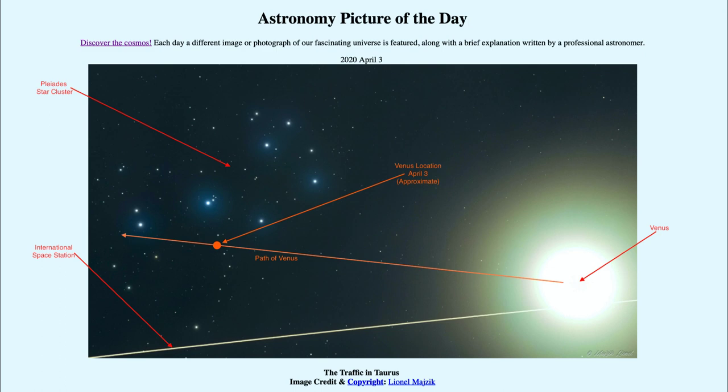Venus is the third brightest object in the sky after the sun and the moon, and the Pleiades is a prominent open cluster very easy to see as well. You don't need a telescope or binoculars to see either of these.